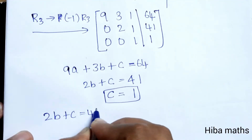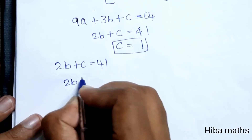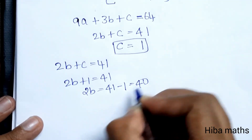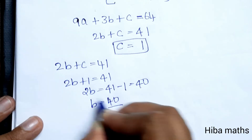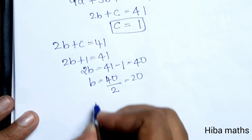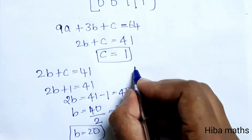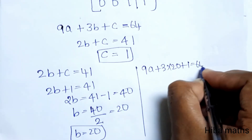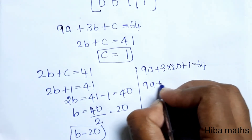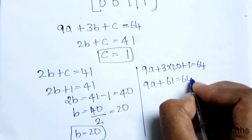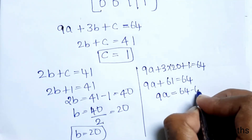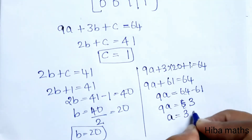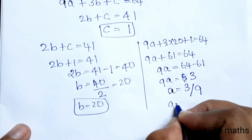Substituting c = 1 into 2b + c = 41: 2b + 1 = 41, so 2b = 40, therefore b = 20. Now substituting a, b, c into 9a + 3b + c = 64: 9a + 3×20 + 1 = 64, so 9a + 61 = 64, giving 9a = 3, therefore a = 3/9 = 1/3.